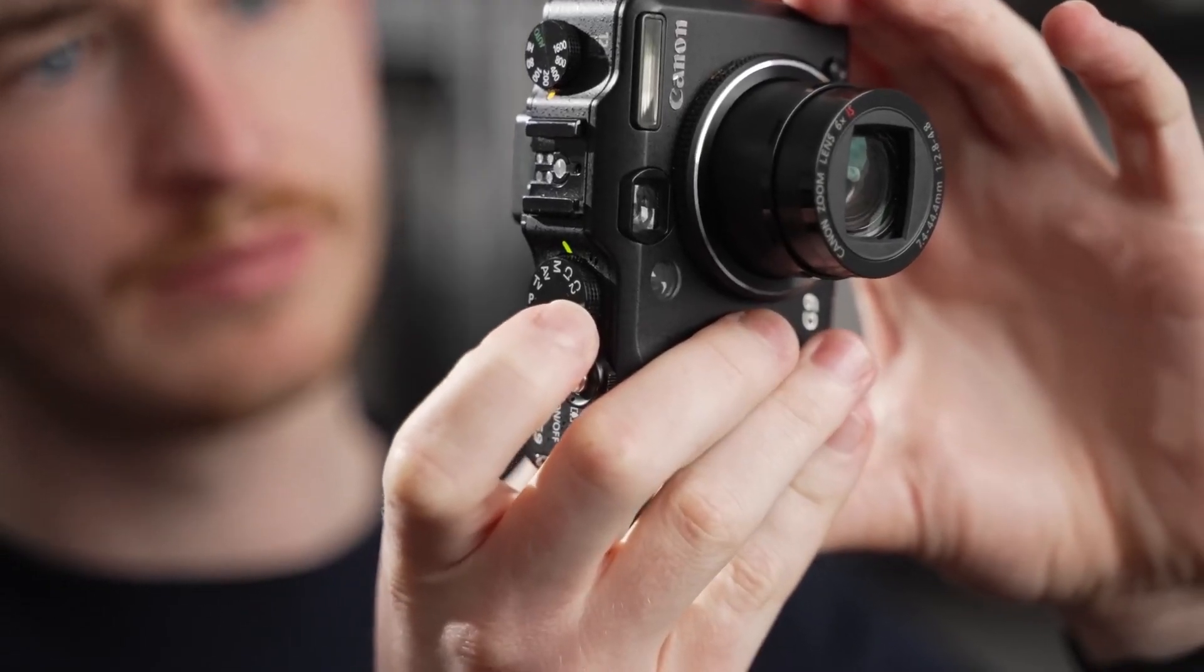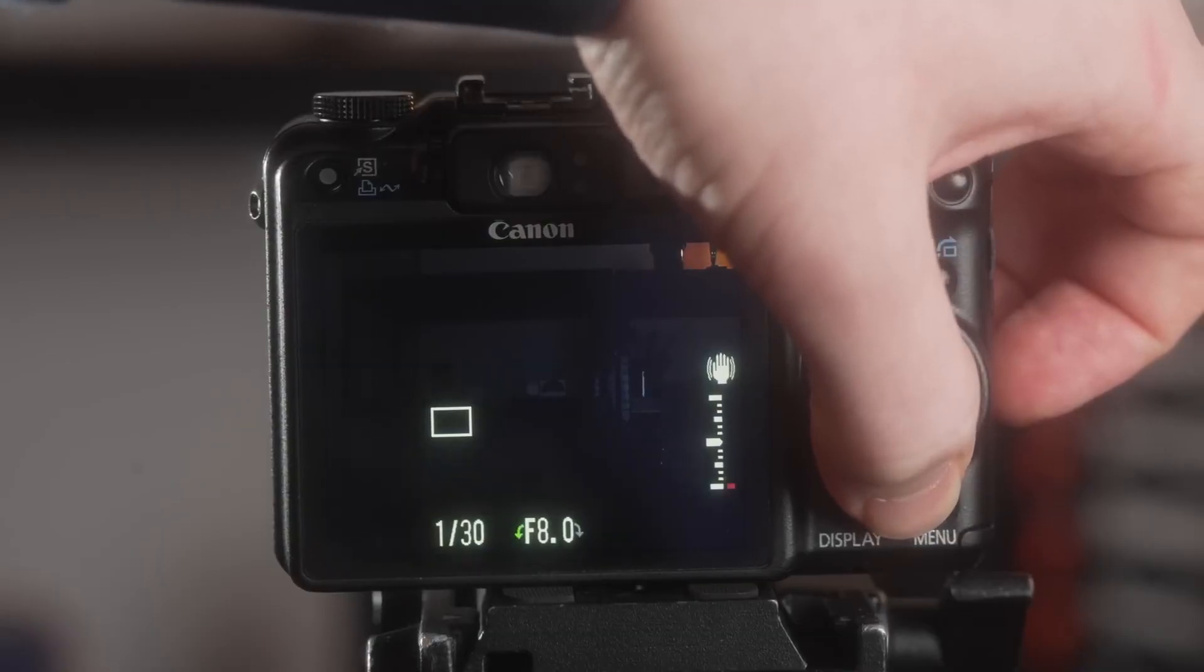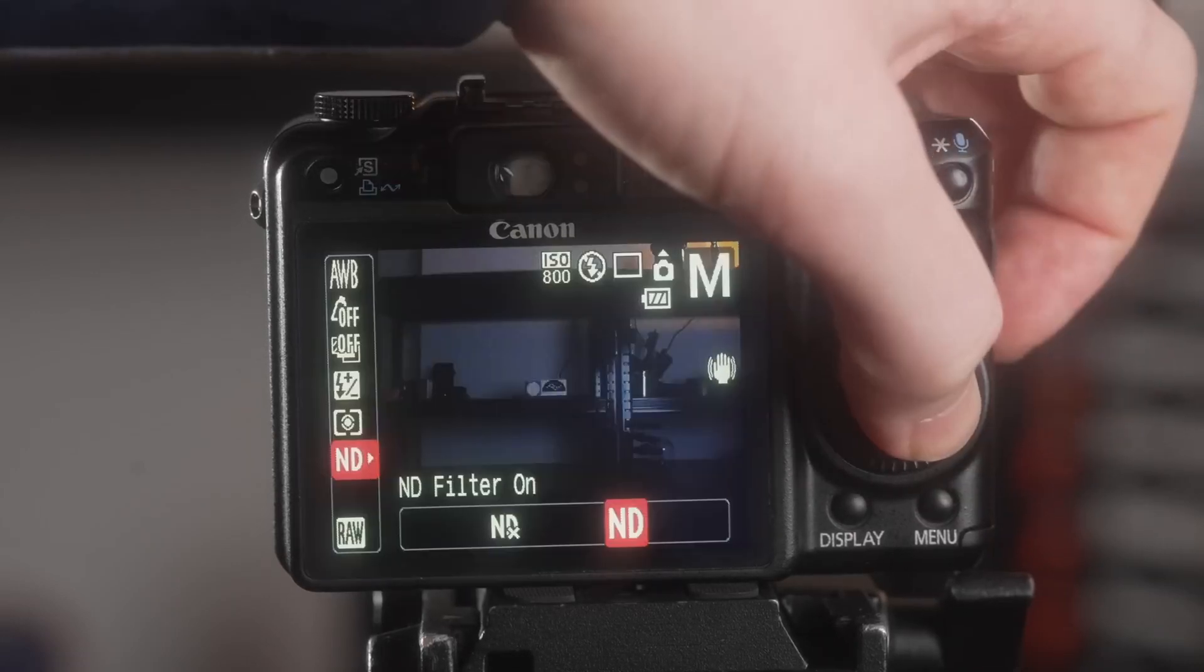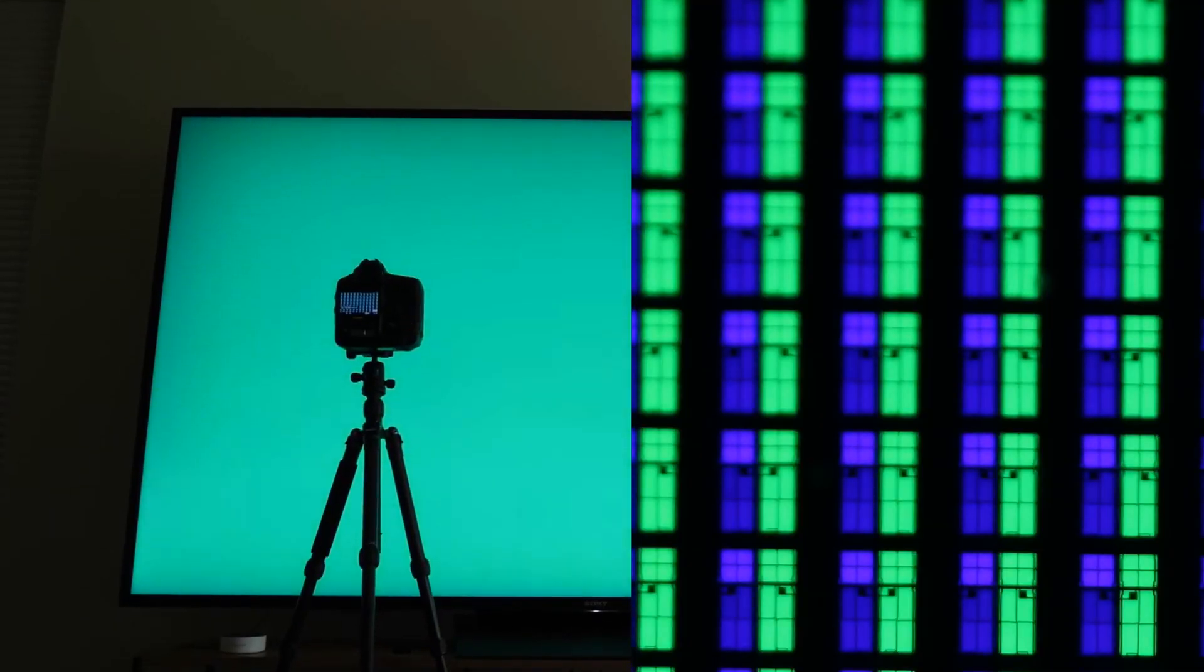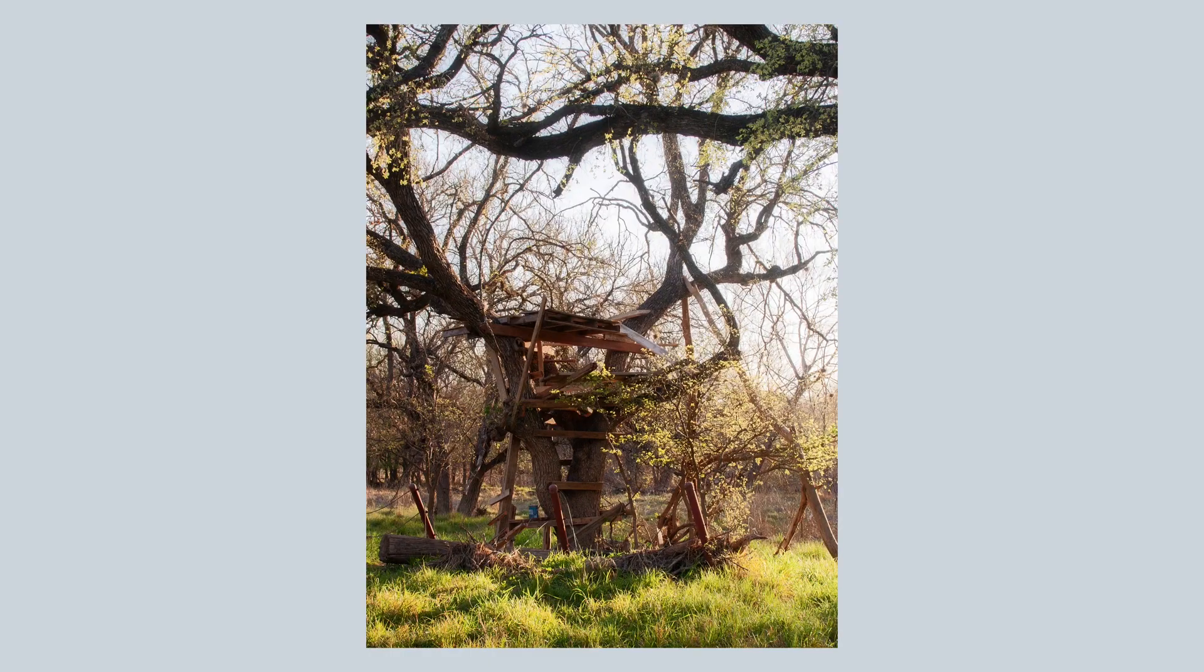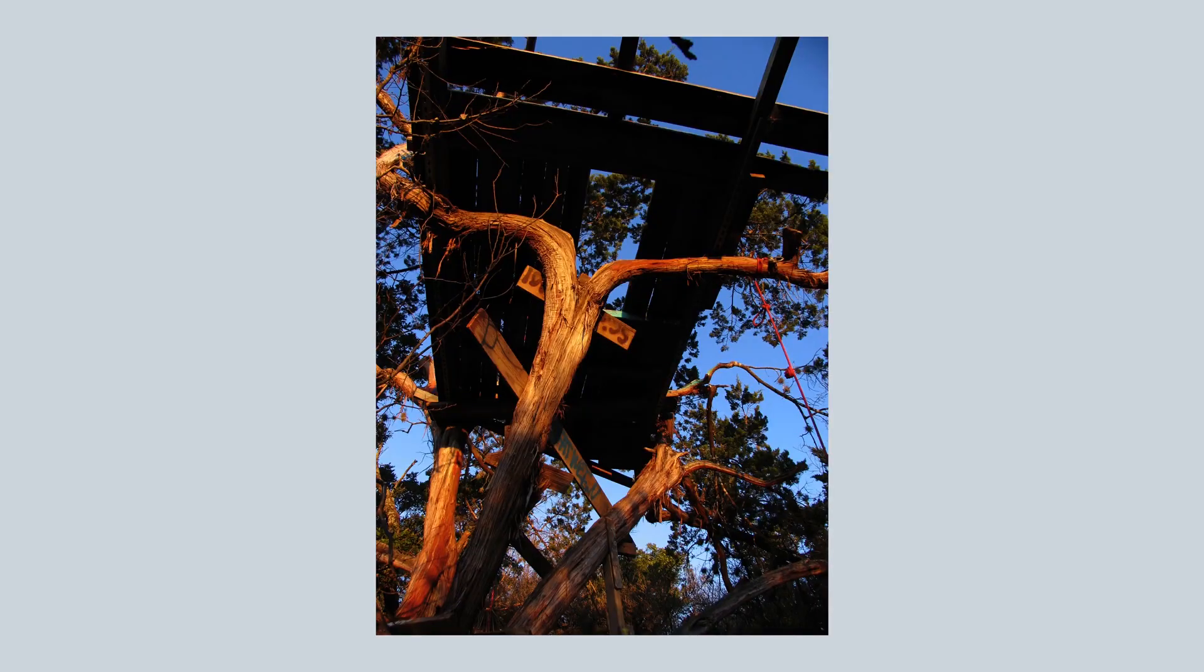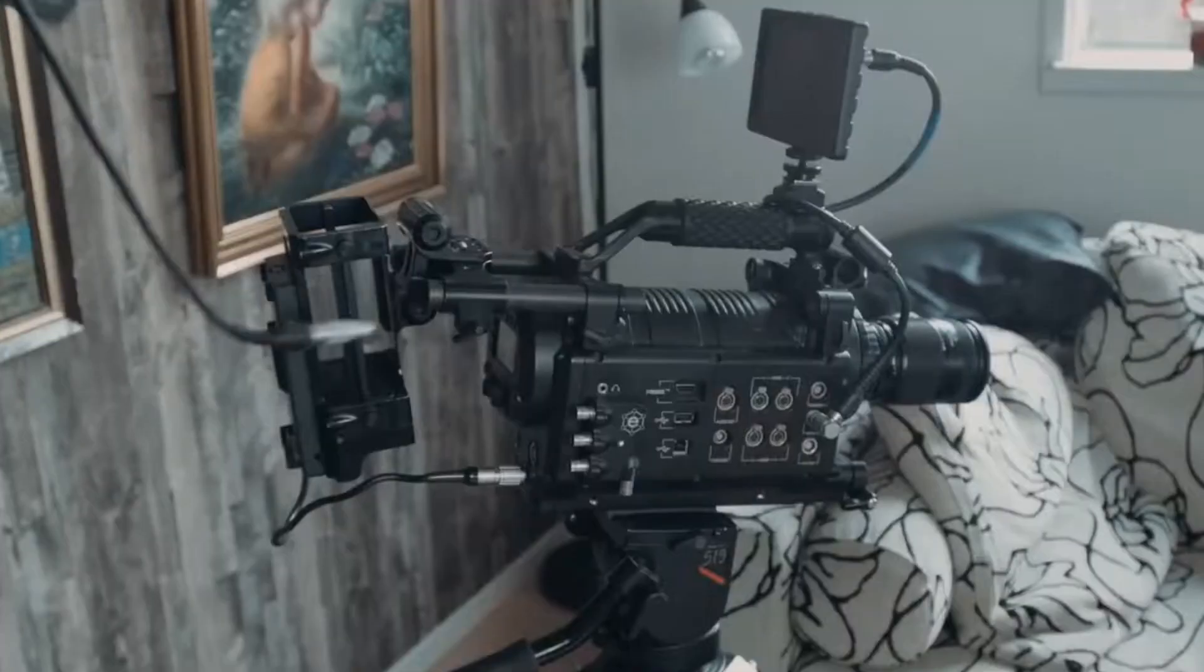However, early compact digital cameras with CCD sensors did have a form of live view, but with considerable lag and a low frame rate. This was due to the slow readout speed of the CCD chips, which took up to a second or more to bin and transfer each frame to the LCD screen or EVF. Despite the limitations, the quasi-live image was sufficient for framing static or mostly static subjects. It's worth noting that CCD cinema cameras use a different design.